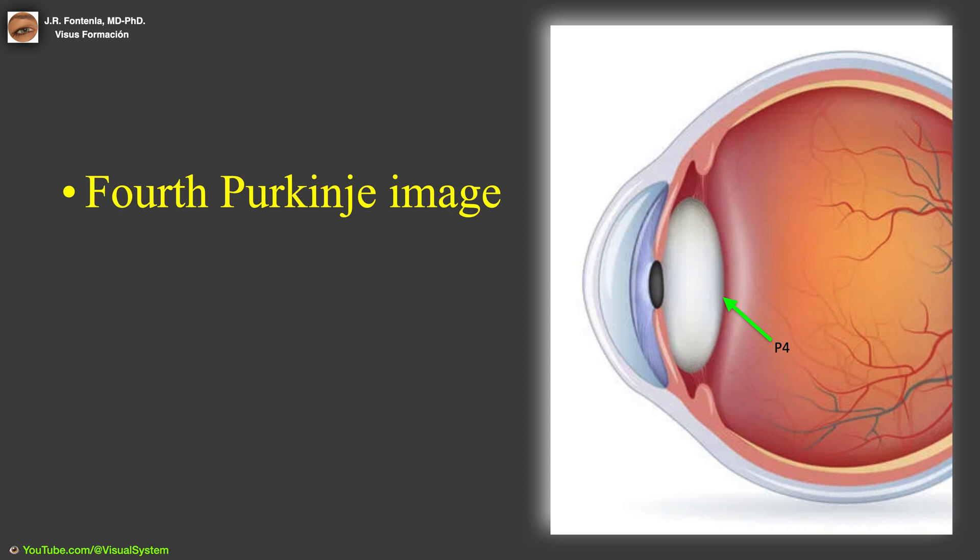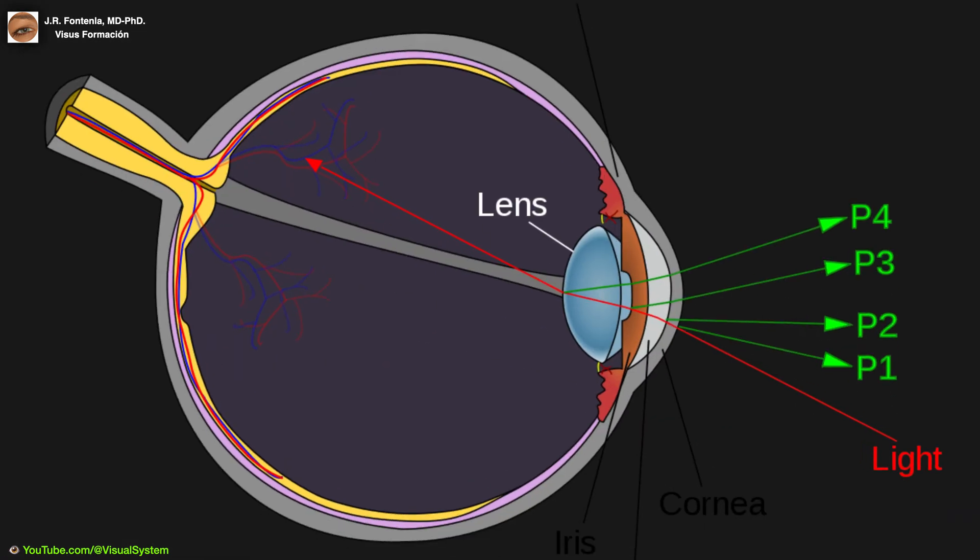Unlike the others, the fourth Purkinje image is an inverted image. These images can be used to evaluate the curvatures and separation of the ocular surfaces.